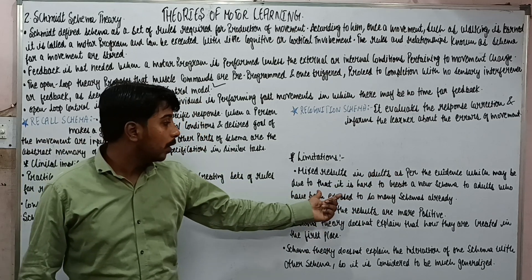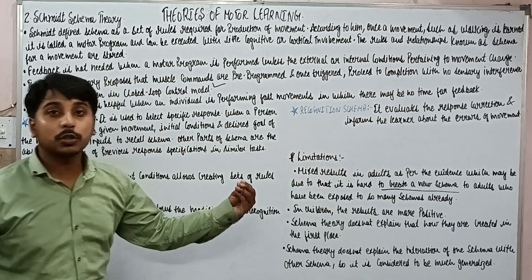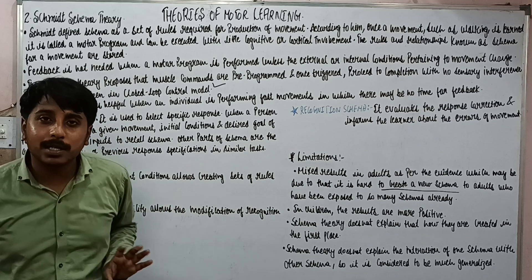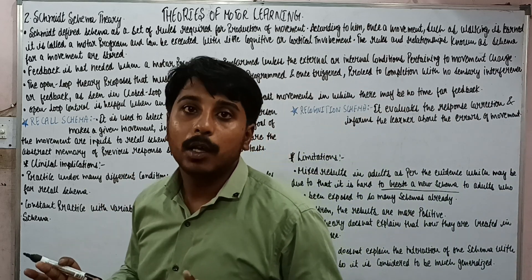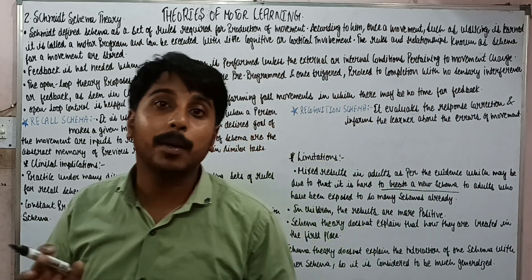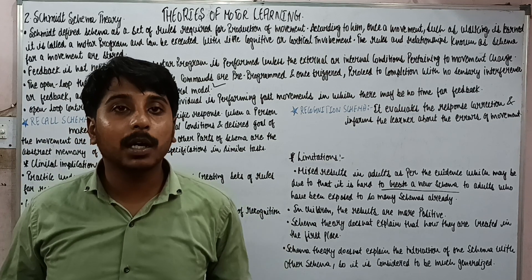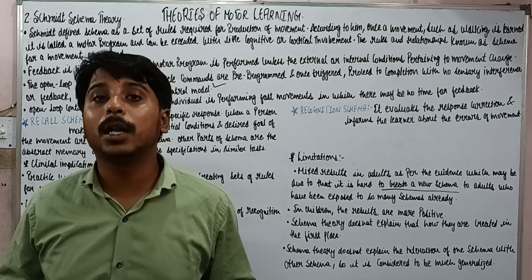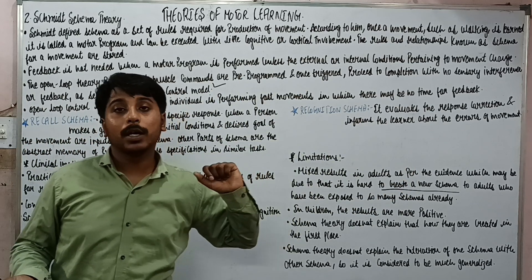This may be due to the fact that it is hard to create a new schema in adults. It is very simple to understand: if a child learns a particular thing, they will definitely do it that way for life. For example, when our ancestors were living in jungles, they were using the quadrupedal method of walking because their conditions required them to walk in the quadruped position. But as we developed, we started the bipedal position. Once a child learns a particular movement, it is difficult to create a new schema.